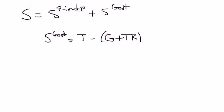Hi, everyone. In this video, I just want to talk about the costs of budget deficits, or government budget deficits. When we generally talk about the costs, we're generally talking about the long run, which means we're going to look at the loanable funds model to figure out what happens to investment expenditures, and then we're going to go from there to figure out what happens to the capital-labor ratio, and then that's going to tell us ultimately what happens to the standard of living in the long run.